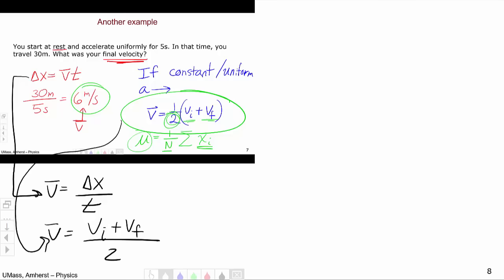And so now let's put these two things together. We have a system of equations. Substitute that into there and we'll get vi plus vf over two gives me delta x over t.